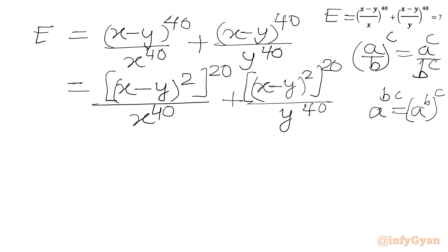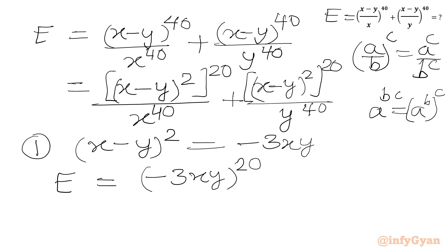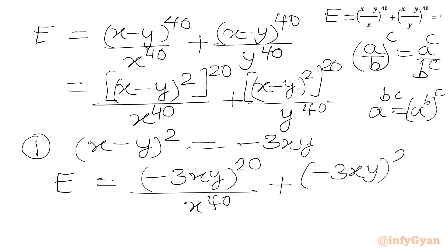We can split our exponents. In place of (x minus y) whole square, we use equation 1, which equals minus 3xy. So we write expression E equal to (minus 3xy) whole power 20 over x power 40, plus (minus 3xy) whole power 20 over y power 40.